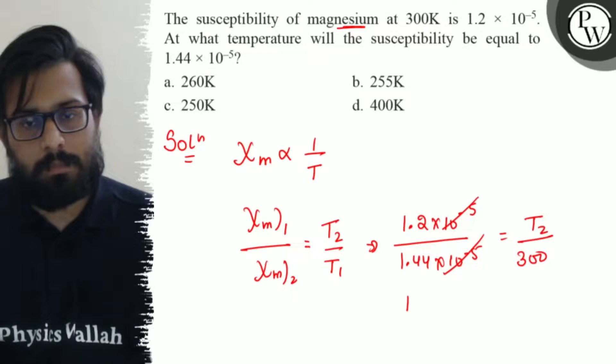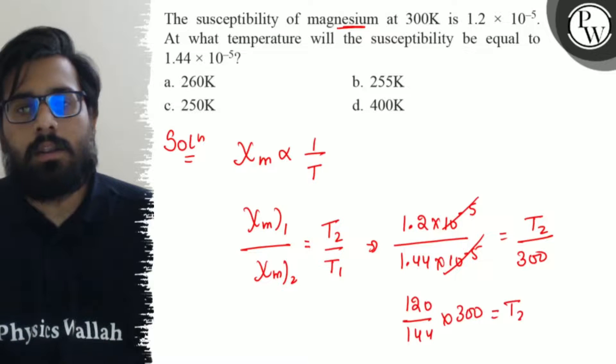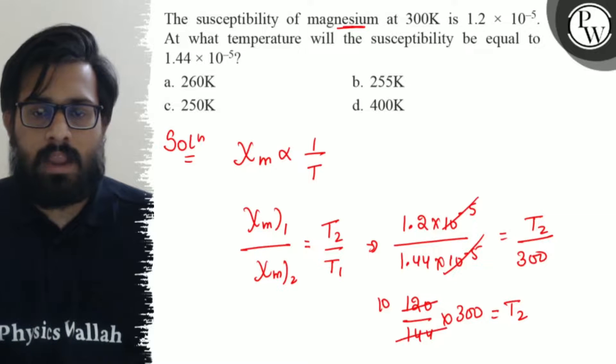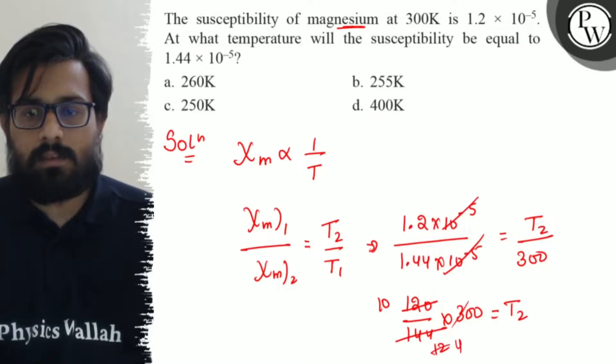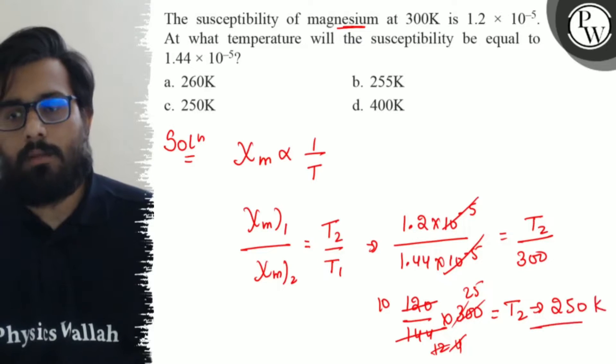This comes to be 120 upon 144 into 300 is the value of T2. So 12 cancels from 120 and 144, leaving 10 upon 12. Then 4 times cancel out, 4 and 25 times cancel out. And this comes to be 250 Kelvin.